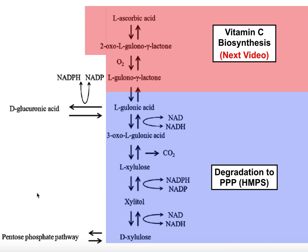In this video and the next, we're going to see two different pathways to actually process this sugar called glucuronic acid. In other videos, we've seen that glucuronic acid can be activated to UDP-glucuronic acid and then ligated to different molecules, and that's involved in phase two metabolism in the liver for drugs and detoxification. But there are actually two other ways to get rid of glucuronic acid, and we're going to look at those here.